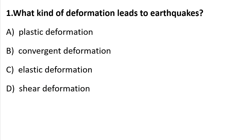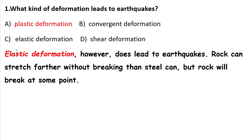Let us check some questions. Question 1: What kind of deformation leads to earthquakes? A) Plastic deformation, B) Convergent deformation, C) Elastic deformation, D) Shear deformation. Elastic deformation does lead to earthquakes. Rock can stretch harder without breaking than steel can, but the rock will break at some point. So the answer will be A — plastic deformation. Wait, the answer is elastic deformation.